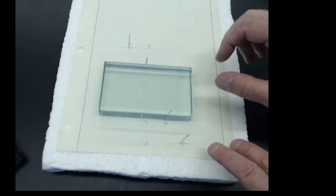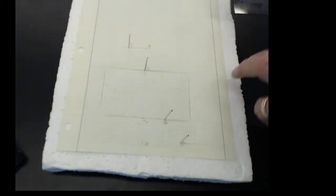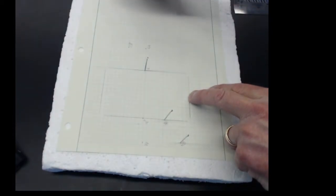Now I can show you how to analyze the data. I'll take the glass slab out and put it aside. And I'll take the pins out too. They're marked, so I know where they were.